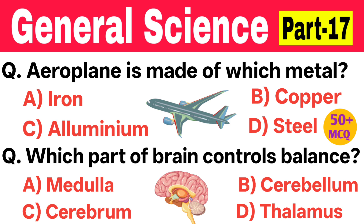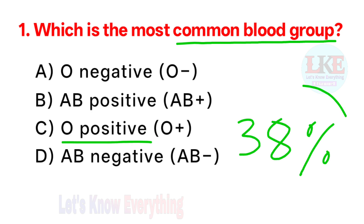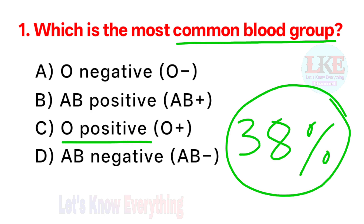So don't forget to watch this video. Then without wasting your time, let's start. First question: which is the most common blood group? Right answer: O positive. It is estimated that approximately 38% of the world population has this type of blood group, according to the Red Cross blood donation.